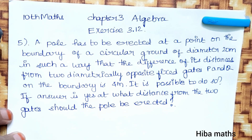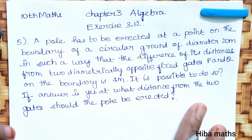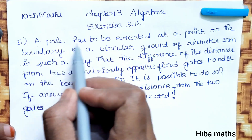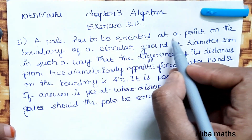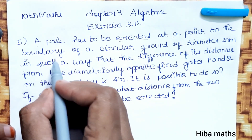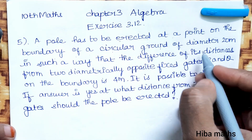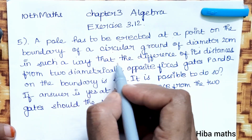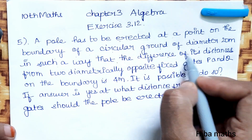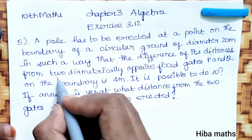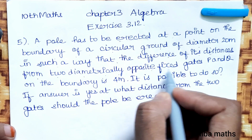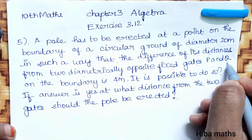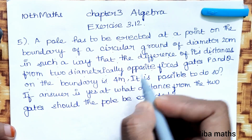Hello students, welcome to Hiba Max 10 Standard, Chapter 3 Algebra, Exercise 3.12, 5th question. A pole has to be erected at a point on a boundary of a circular ground of diameter 20 meters, such that the difference of its distances from two diametrically opposite fixed gates P and Q on the boundary is 4 meters.